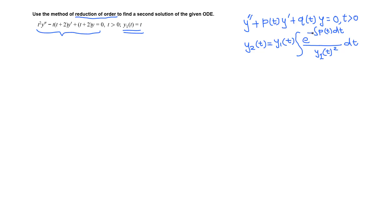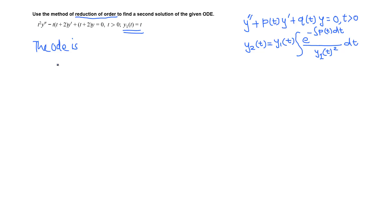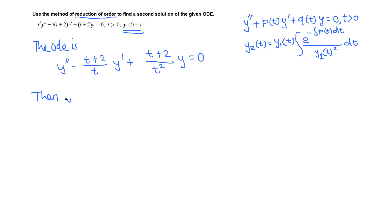When we started with a linear first-order ODE the integrating factor had a negative sign, but when we move terms to the right side the sign is negative. So we need to put this ODE in standard form — y'' should have no coefficient. We have t² here, so we divide through by t², which is allowed because t is positive. The ODE becomes: y'' minus (t+2)/t · y' plus (t+2)/t² · y = 0.